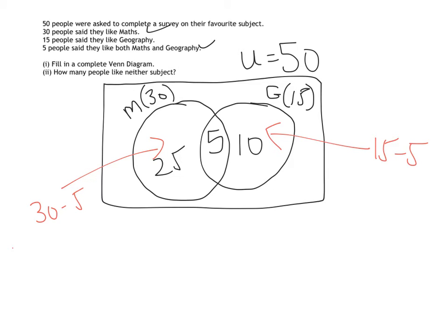A lot of students stop at this point, but we need to think, we've got 25 people who just like maths, 5 people who like maths and geography, and 10 people who like geography alone. If we add those together, we're going to see that that adds up to be 40 students in total. But there was 50 people who took part in this survey.